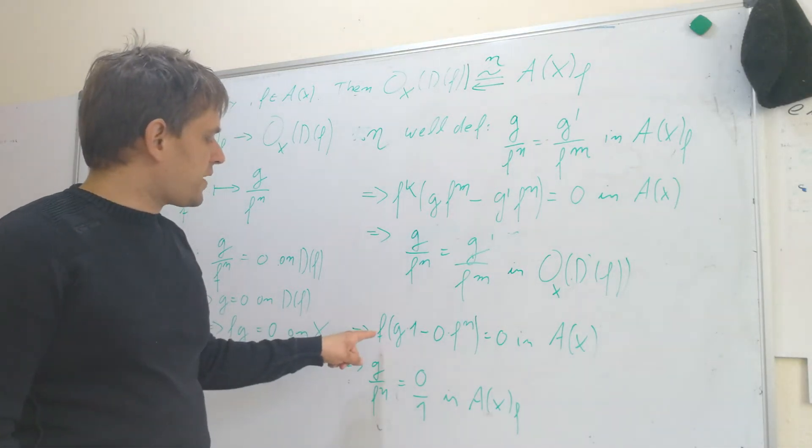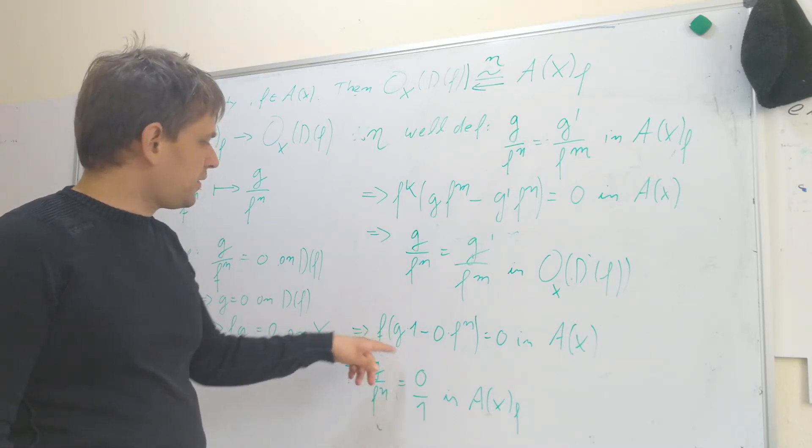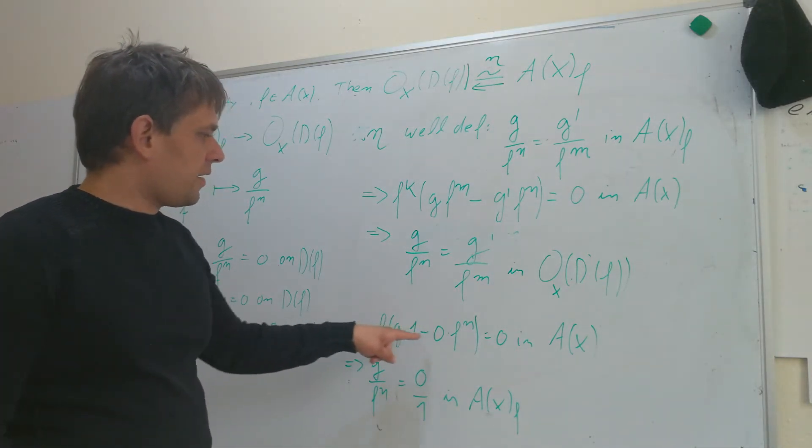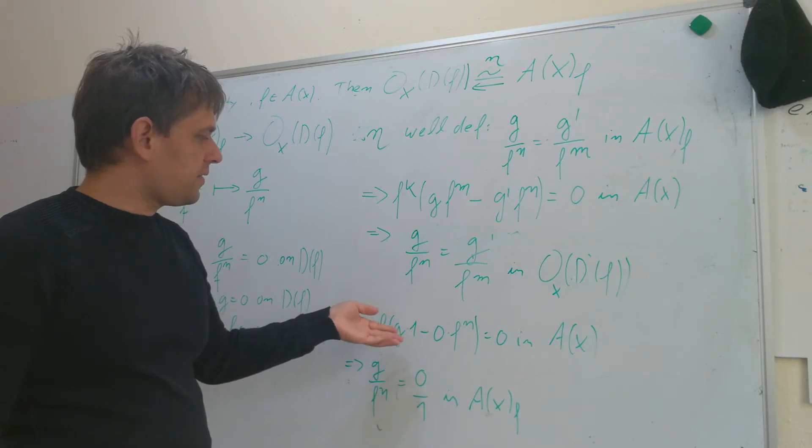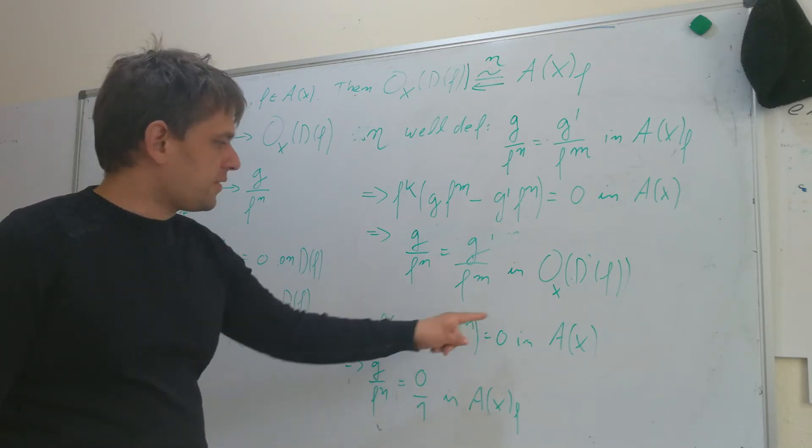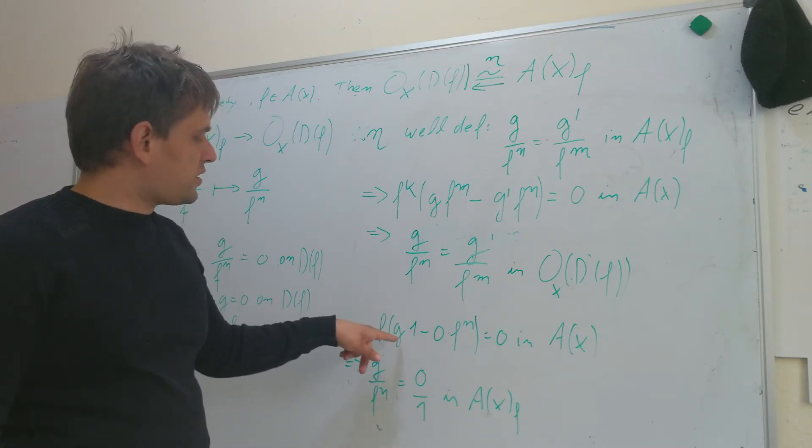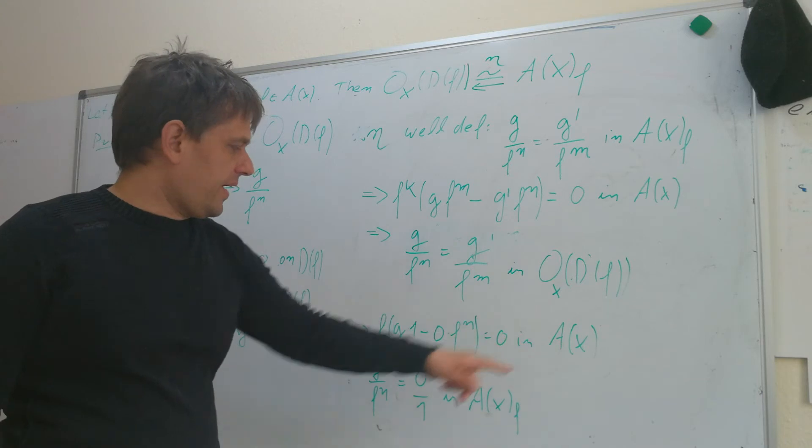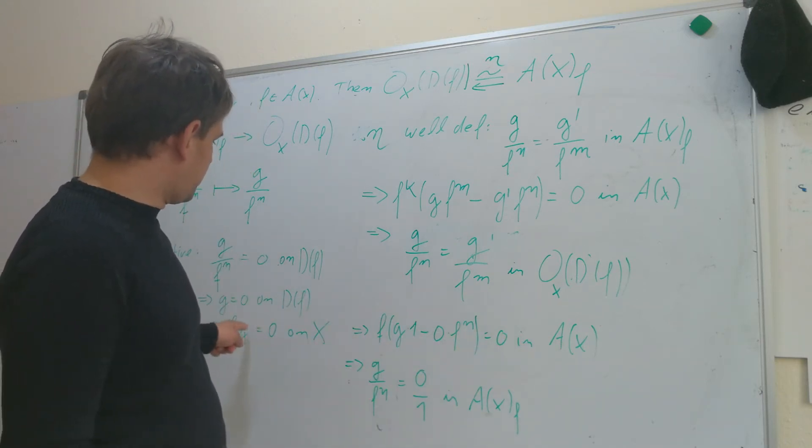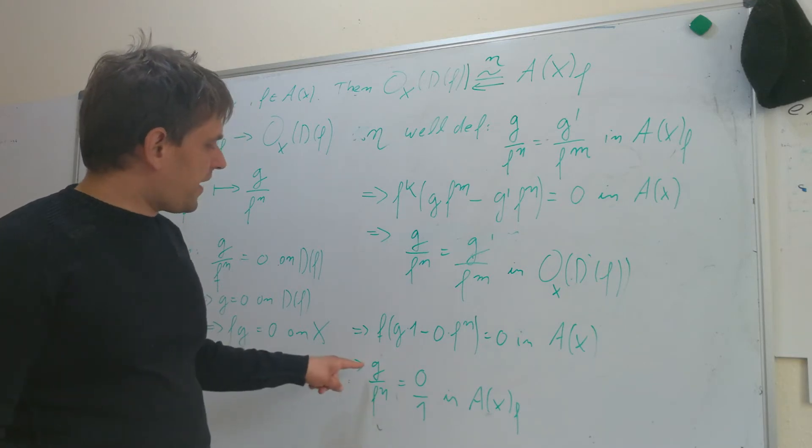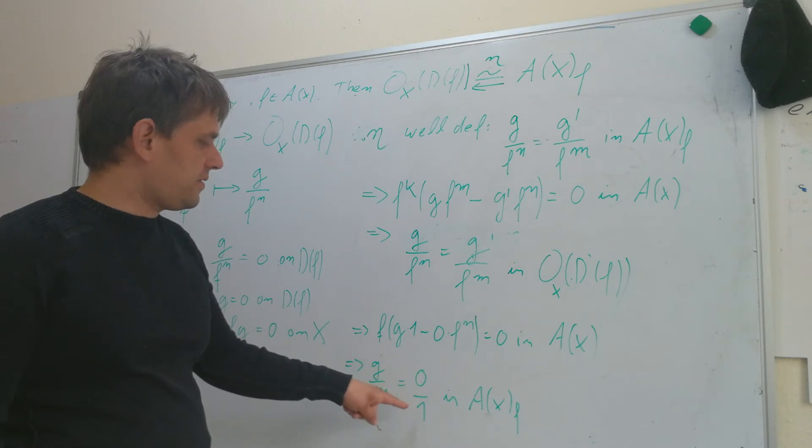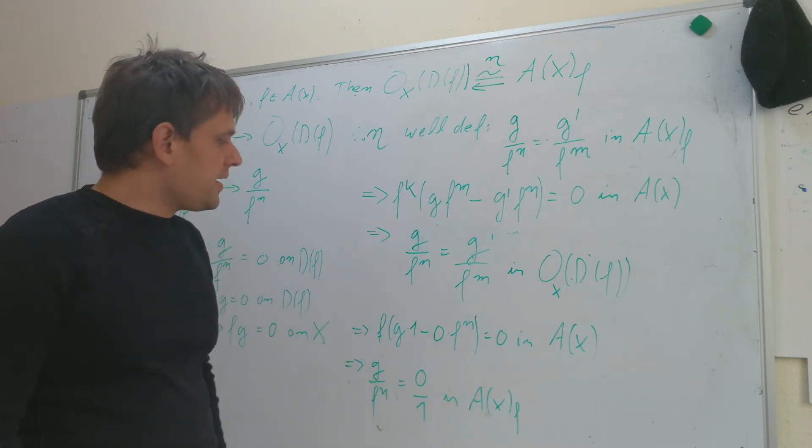But this means that we can write f·g in this form here, which is the form we need for our localization. So, we can write f times g times 1 minus 0 times f^n. And this is equal to zero in Ax. This is just this result here.